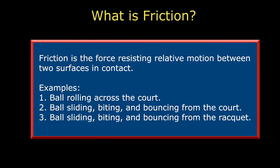Given that context, we ask, what is friction, and what does friction do? Friction is the force resisting relative motion between two surfaces in contact. It is a grabbiness of sorts, such as you imagine occurring with Velcro or sandpaper. You see friction at work when you roll a ball across the court or when a shot bounces from the court or racket. Let's briefly look at each of these.